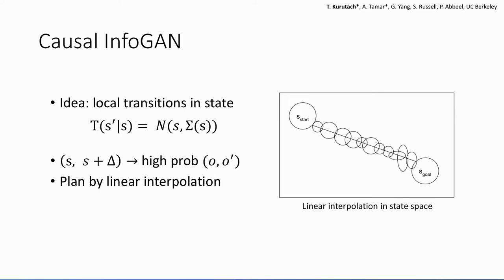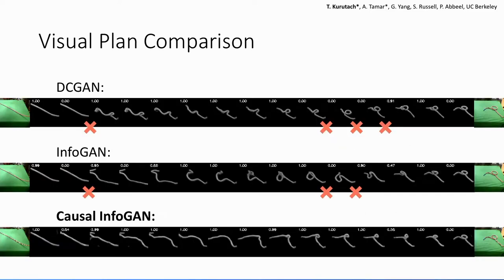And in this case, we will look at a local Gaussian transition in the function of state. So having a low variance in this transition would mean that a small transition in the latent space would generate a pair of observations that are highly probable in the data.